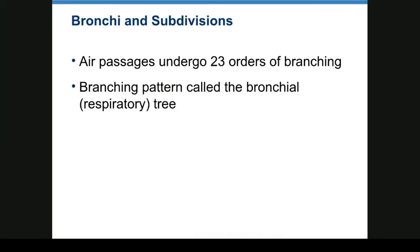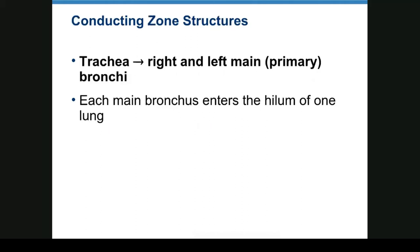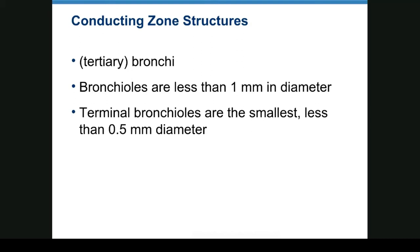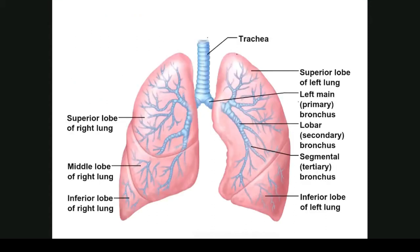The air passages undergo 23 orders of branching, called the bronchial tree. The trachea bifurcates into right and left primary bronchi, each entering the hilum of one lung. Then you go into secondary and tertiary bronchi. Bronchioles are less than one millimeter in diameter; terminal bronchioles are less than 0.5 millimeters. The right lung has superior, middle, and inferior lobes; the left lung has superior and inferior lobes. The cardiac notch leaves room for the heart.